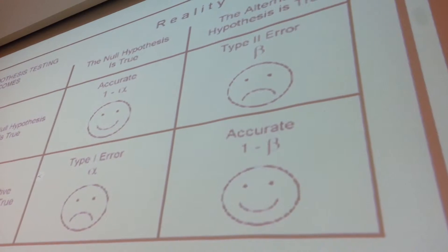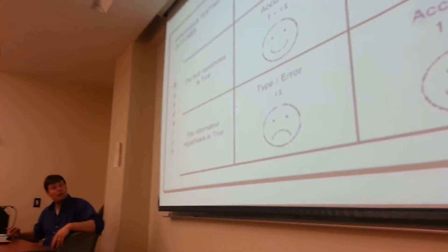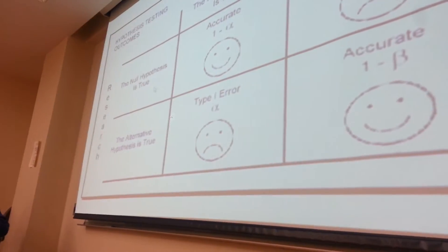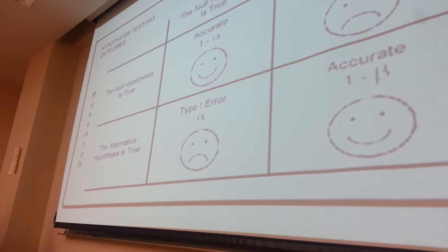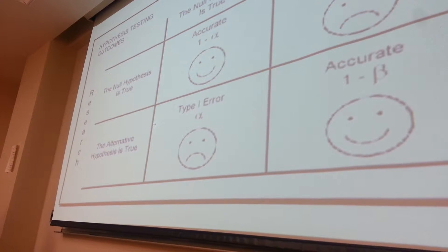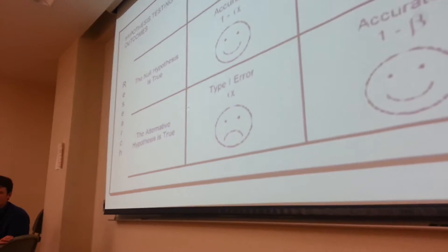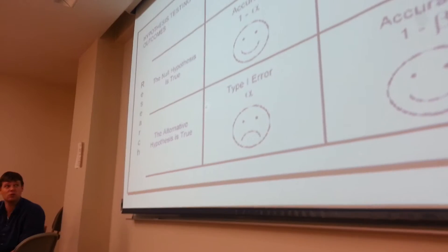But when you're running your study, because you're sampling, because you're never certain, you're not looking at the entire population, if you have to retain that null hypothesis, if you have to say it's true, you should be in the back of your mind saying, did I commit a Type 2 error? Did I say there's no relationship or did I say there's no effect when in reality there is?